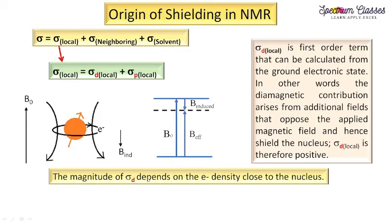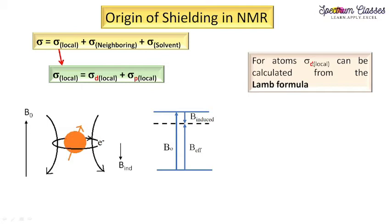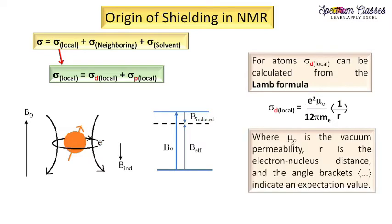The magnitude of sigma d depends on the electron density close to the nucleus. For example, different halogen atoms attached to a methyl group give different chemical shift values based on electron density around the nucleus. For atoms, sigma d can be calculated using the Lamb formula. The terms in the Lamb formula include: μ₀ (vacuum permeability), r (the distance of the electron from the nucleus), and the expectation value ⟨1/r⟩.